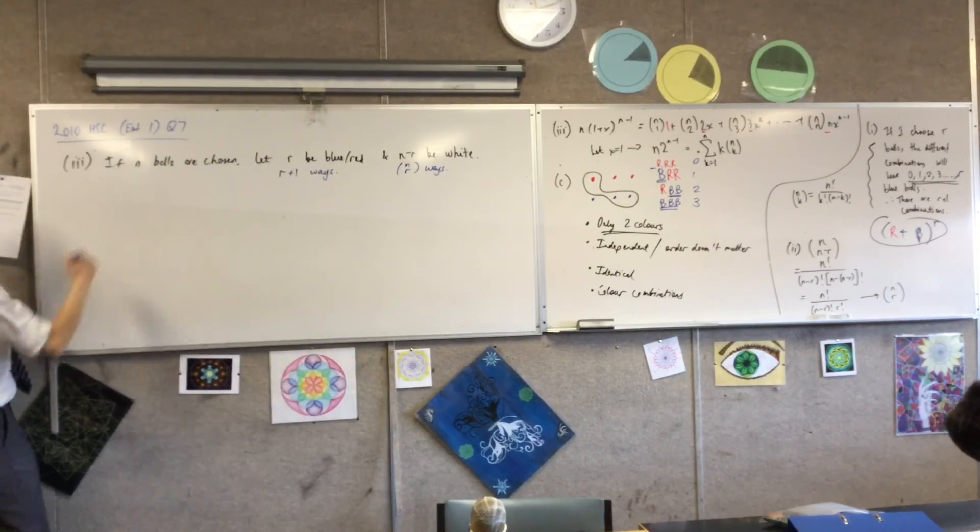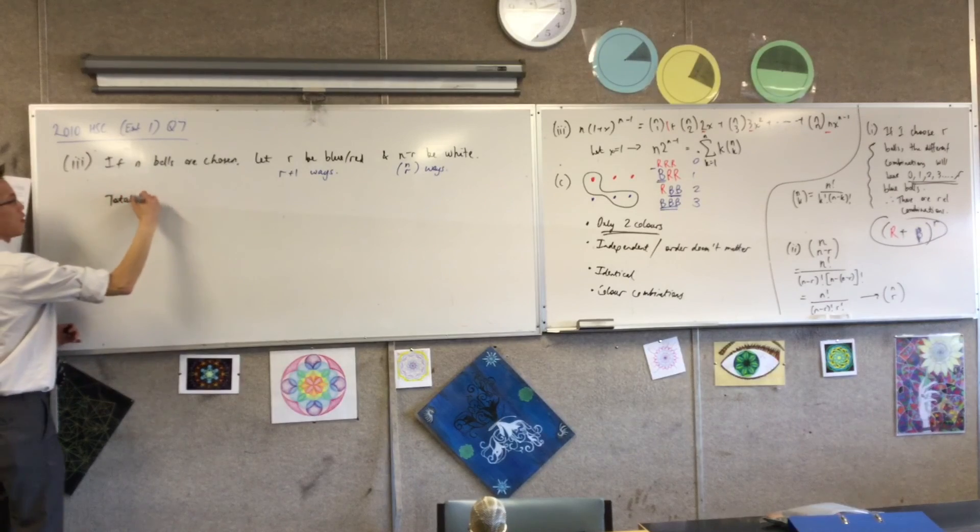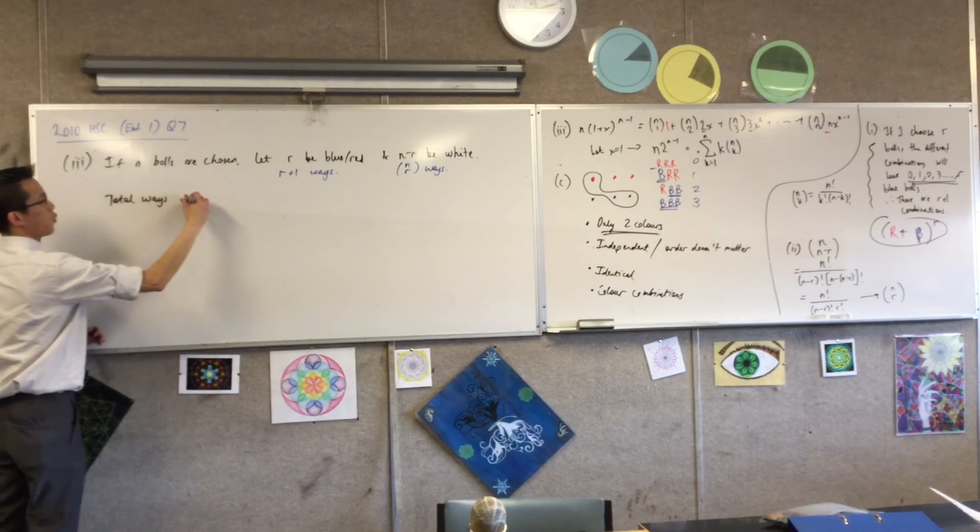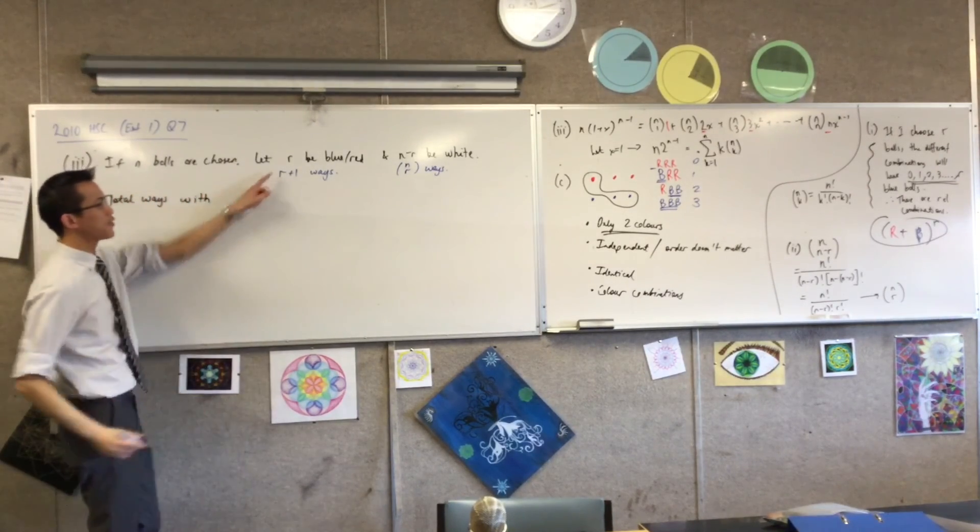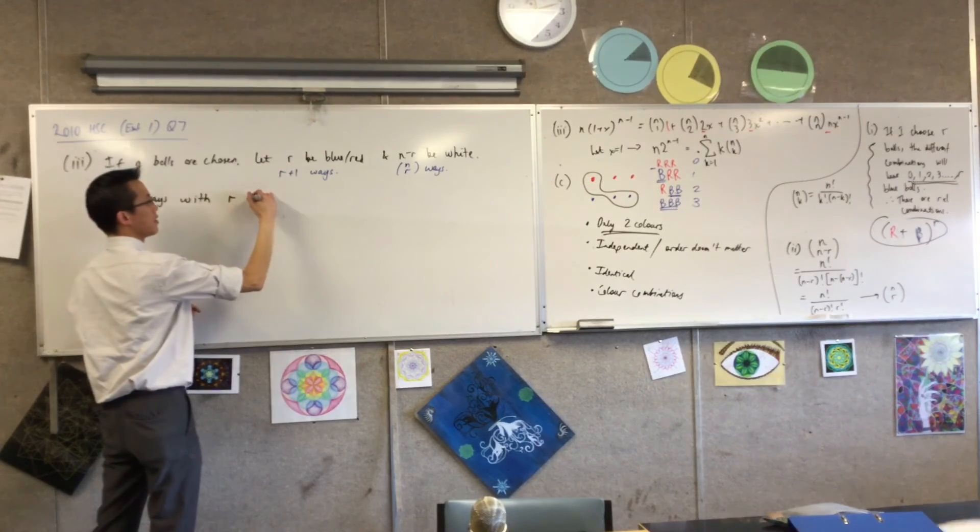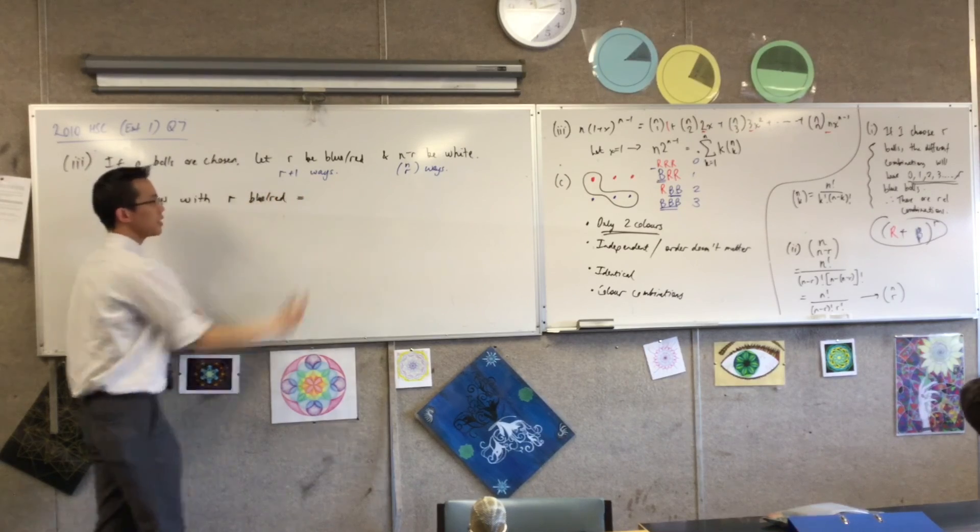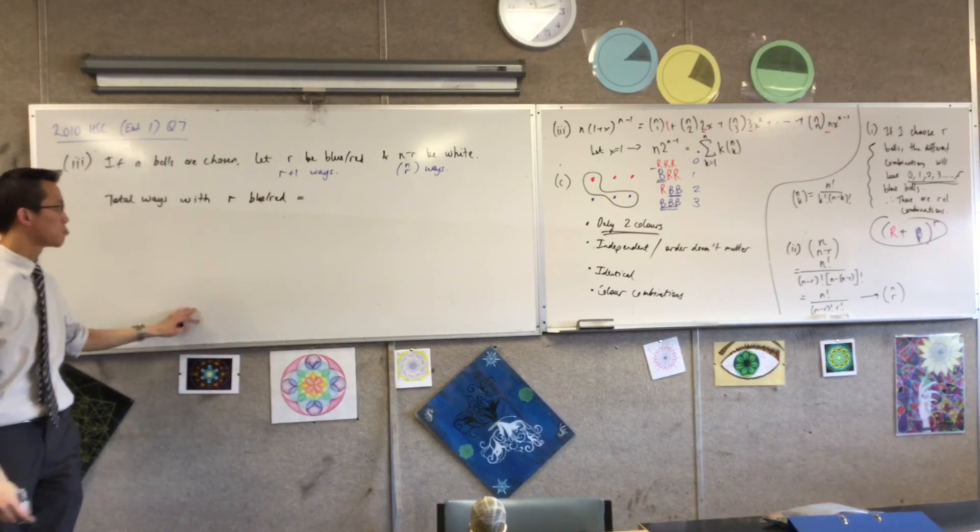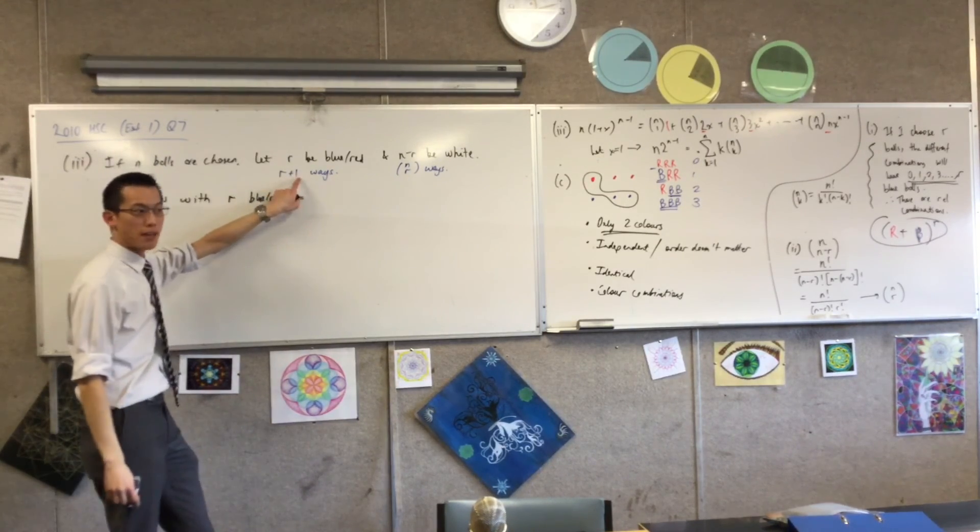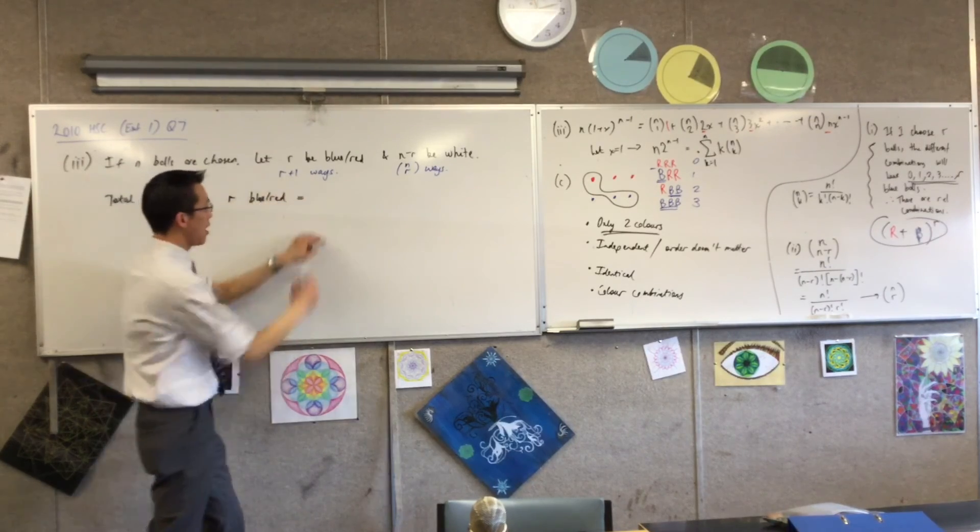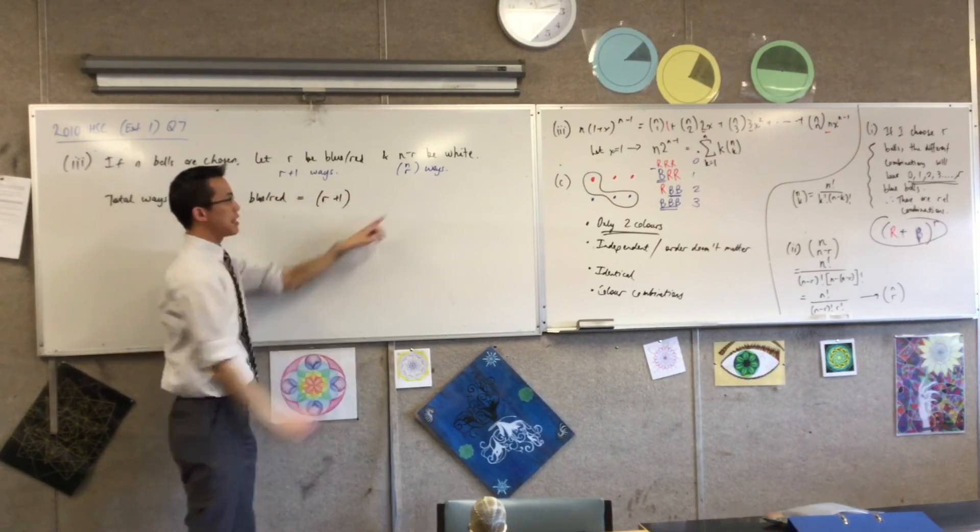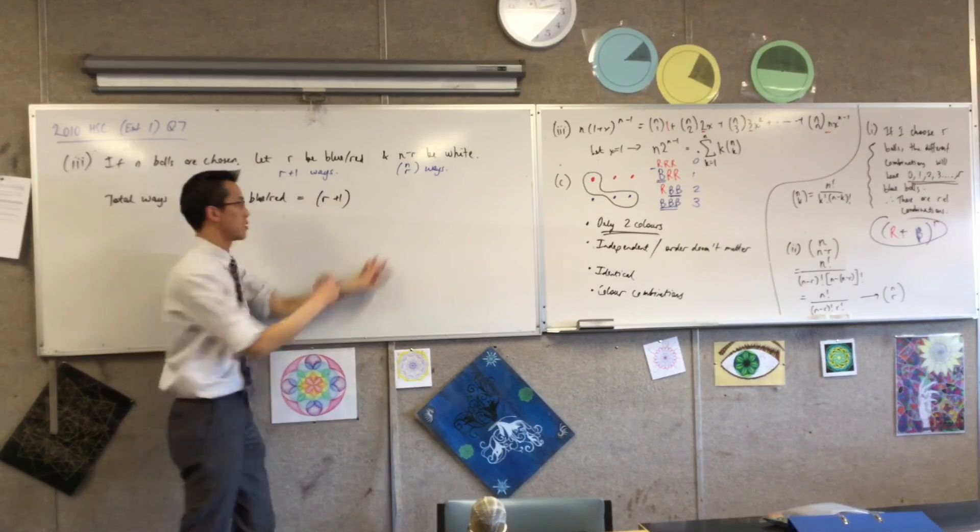So what I've got here is the total number of ways with, remember, I've defined r blue-red, is equal to, this is how many you're going to do one part, first stage is over, r plus 1, and then this is how many you've got to do for the white ones, second stage.